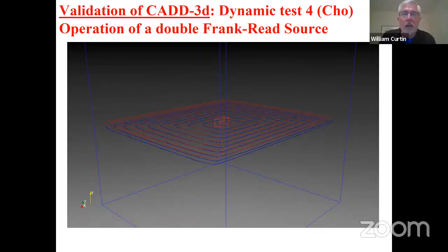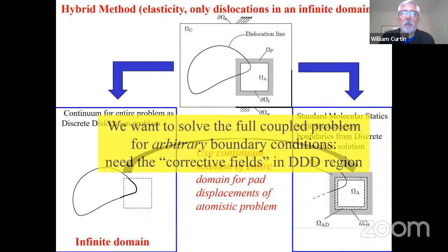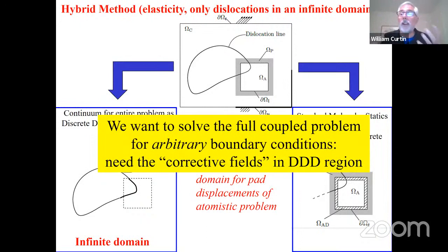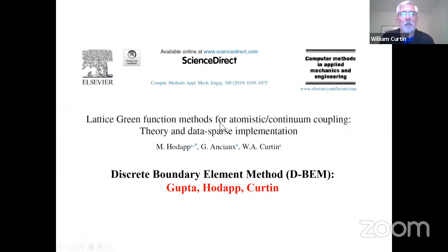So this is how far we've gone—sending out a dislocation pile-up dynamically from an atomistic source. Now, we did all this with a hybrid method that didn't solve the full mechanics problem. We really want to solve the full 3D mechanics problem. To do that, we need an efficient 3D solution using Green's functions. What we've developed is essentially a boundary element method—we call it the discrete boundary element method—because it comes from the atomistics, making it intrinsically consistent with the atomistic system. We published one paper on this method requiring a data-sparse implementation, and Ankit Gupta, Max, and I are working on the next paper on this discrete boundary element method.